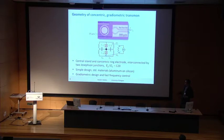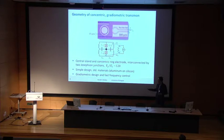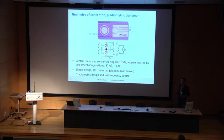It's a conventional transmon system with an E_J/E_C ratio of about 120. We have a fairly large cleanroom where we do electron-beam lithography, metal deposition, mostly aluminum liftoff. The materials we use are aluminum and aluminum oxide for the tunnel junctions, lifted off on an intrinsic silicon substrate.